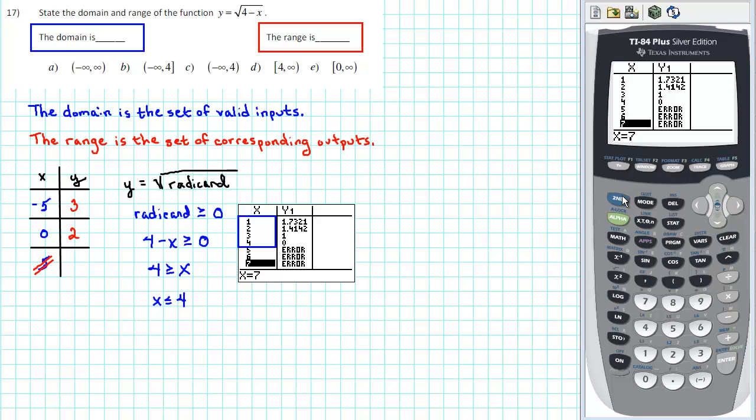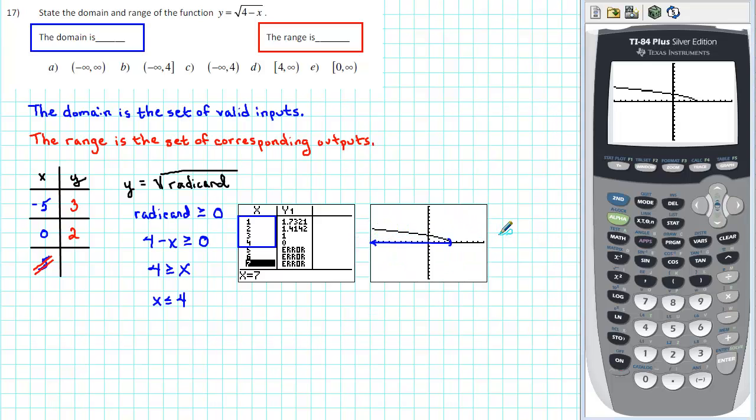To reinforce the domain visually, we can create a graph. Let's go to zoom and select zoom standard, which is number 6. Visualizing the graph from left to right, we see that the graph continues indefinitely to the left, but as we go to the right, the graph stops once we get to x equals 4. So in interval notation, the domain of our function is the interval from negative infinity to positive 4, and we use a bracket at x equals 4 to indicate that 4 is included. When x equals 4, the corresponding y value is 0.